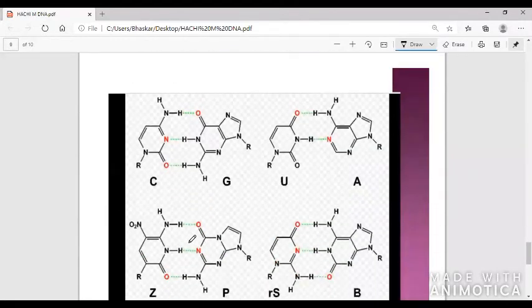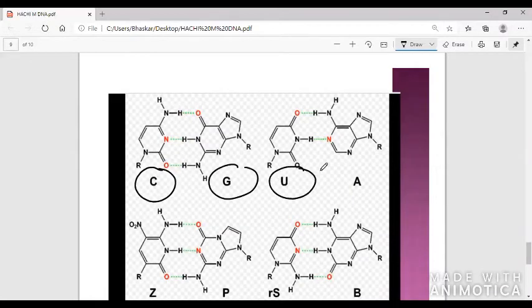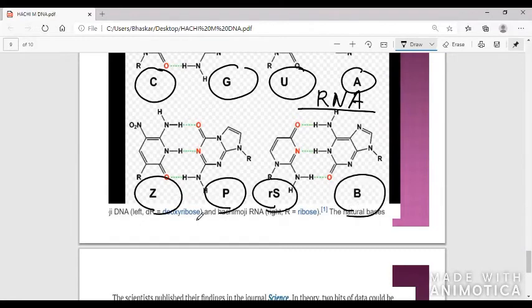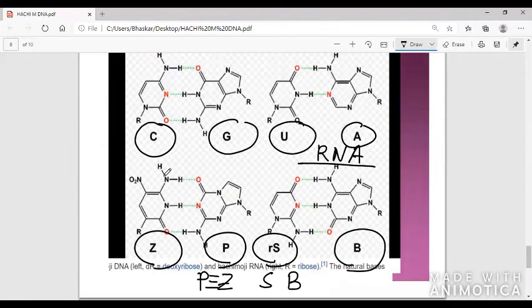Natural bases are like cytosine pairs with guanine, uracil pairs with adenine in case of RNA molecule. Extra four letters that have been used and have been named are P, Z, S, and B. P pairs with Z with three hydrogen bonds as happens between G and C.